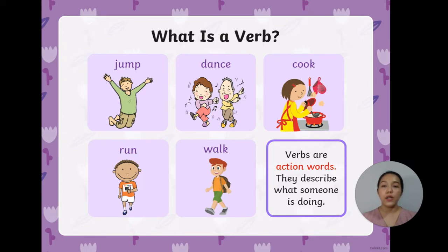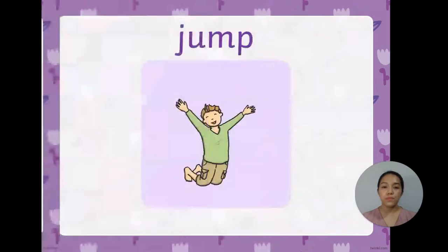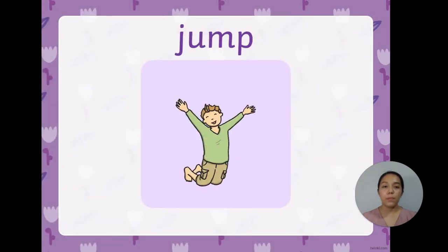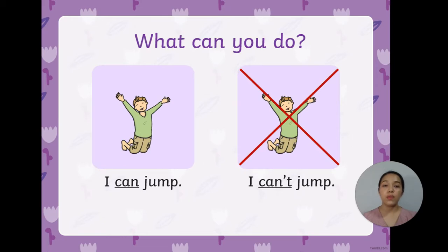For example, we have here jump, dance, cook, run, and walk. Jump — J-U-M-P. What can you do? You can answer: I can jump. Or, I can't jump.